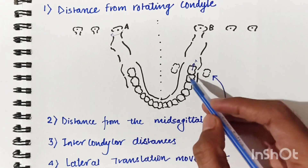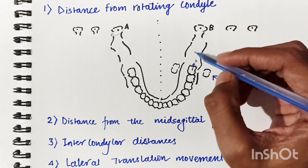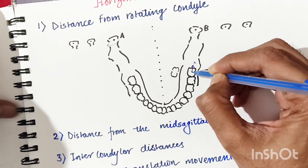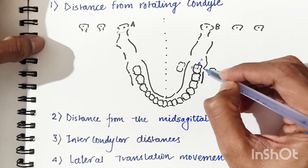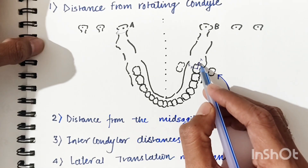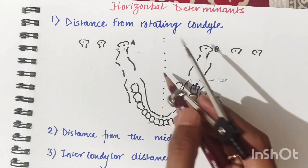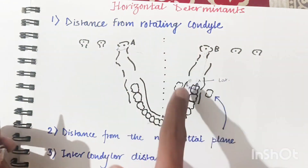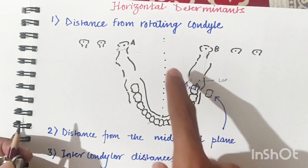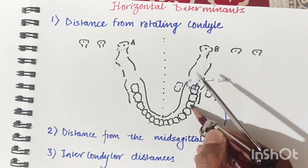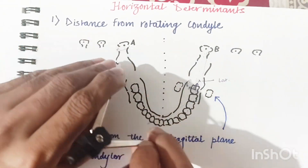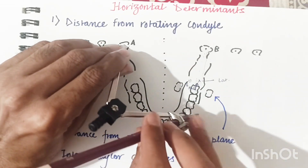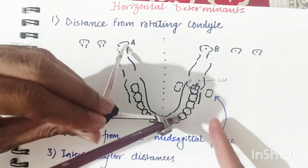If the rotating condyle moves to position B, the mandible moves differently, producing a lateral trusive path for this molar. So we have the mediotrusive path and the lateral trusive path. Now, if we consider a tooth positioned farther away from the rotating condyle, when we rotate the mandible, it will produce a different arc.